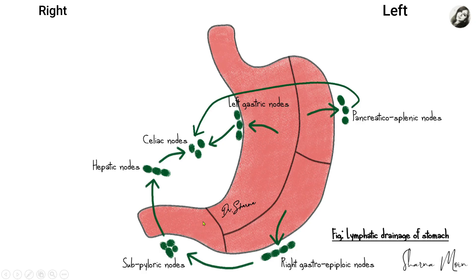The pyloric part is very special because lymph from this region drains in all directions. It drains into the sub-pyloric nodes, which then drain into the hepatic nodes, and from the hepatic nodes the lymph reaches the celiac nodes. The pyloric region also drains directly into the hepatic nodes and into the left gastric nodes, and from the left gastric nodes, as we know, lymph ultimately reaches the celiac nodes.